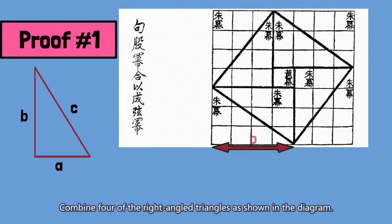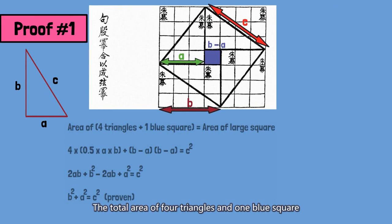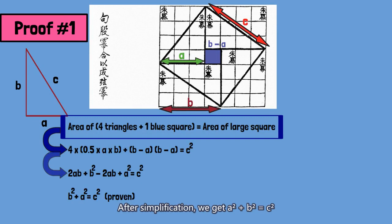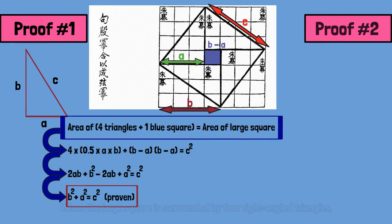Combine four of the right-angled triangles as shown in the diagram. The blue square would have an edge length of b minus a. The total area of four triangles and one blue square is equal to the area of the large square. After simplification, we get a squared plus b squared equal to c squared.